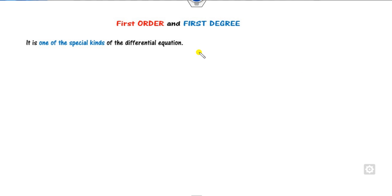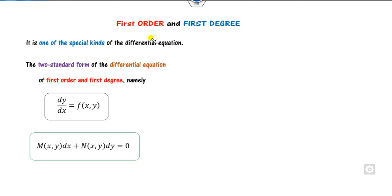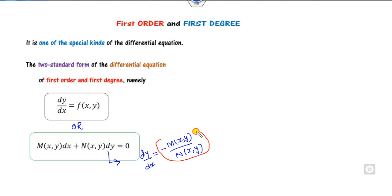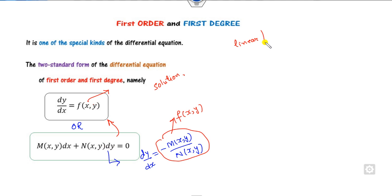What we have discussed so far: what is the first order and first degree differential equation. It is a very special kind of differential equation which is represented in the form dy/dx = f(x, y), where if I write this as dy/dx minus M(x,y) over N(x,y), I call this function f(x,y) which is of the same nature.